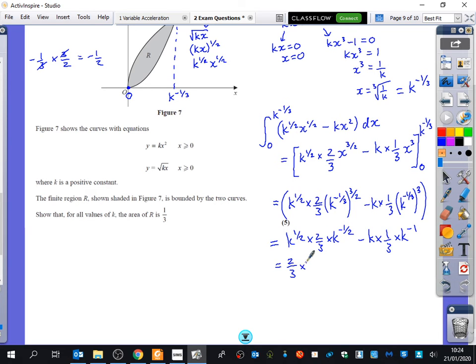Now, you might like to see this just written in a different order, because that might help our brains see this. We've got 2 thirds times k to the half times k to the minus a half minus 1 third times k times k to the minus 1. What is k to the half times k to the minus a half? K to the zero. What is k to the zero? 1. So, this whole thing here is just 2 thirds multiplied by 1, which is 2 thirds. What is k times k to the power of minus 1? k to the power of 0, which is just 1. So, this is just minus 1 third. And 2 thirds minus 1 third is 1 third.